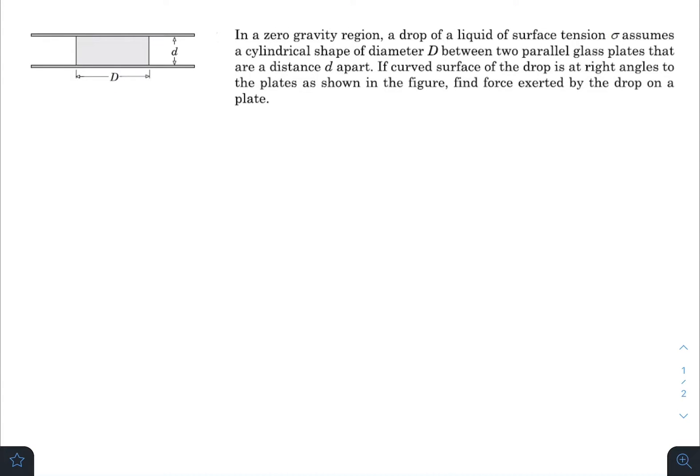What is up everyone, I hope all of you are doing great. In today's question, we have: in a zero gravity region, a drop of a liquid of surface tension sigma assumes a cylindrical shape of diameter D between